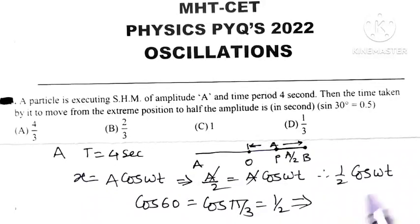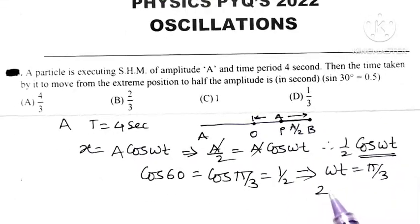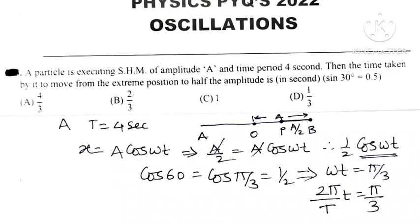This implies that omega T is equal to pi by 3 but omega is equal to 2 pi by T. Omega is equal to 2 pi by T into small t is equal to pi by 3.